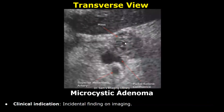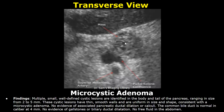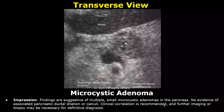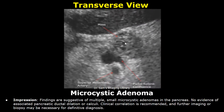A microcystic adenoma can also be an incidental finding on imaging. Its findings include multiple small well-defined cystic lesions ranging from 2 to 5 millimeters. These cystic lesions have thin smooth walls and are uniform in size and shape, consistent with a microcystic adenoma. Impression: findings are suggestive of multiple small microcystic adenomas in the pancreas. Clinical correlation is recommended and further imaging or biopsy may be necessary for definitive diagnosis.